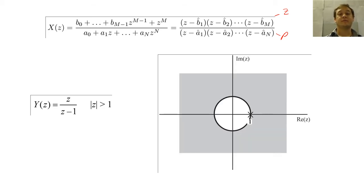For example, if we had this Z-transform, we would have a pole at one and a zero at zero. For this right-sided Z-transform, the pole marks the inner boundary of the ROC.